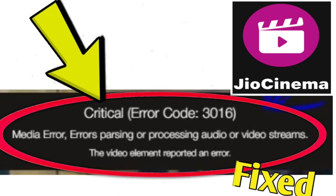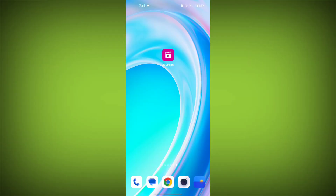If you're encountering a GeoCinema critical error code 3016, a media error involving errors parsing or processing audio or video streams, where the video element reported an error, you can try the following solutions. Here are step-by-step solutions for GeoCinema error 3016.